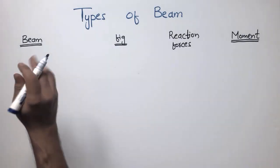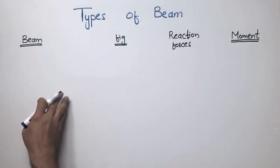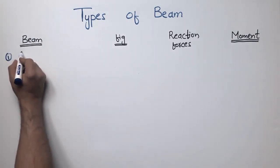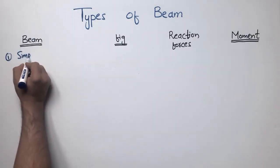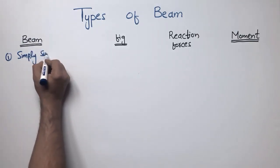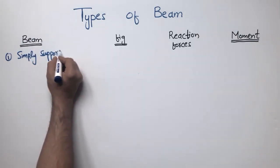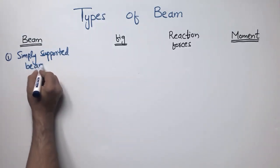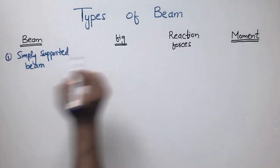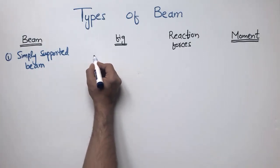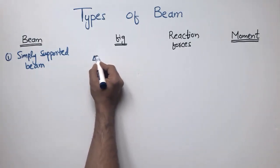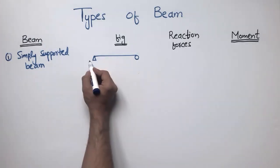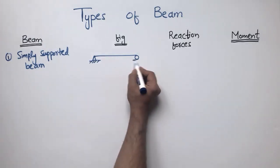There are mainly six types of beams used in civil engineering. The first and most common one is the simply supported beam, used in several engineering structures. It looks like a beam having two supports at the ends — one is a hinge support and one is a roller support.